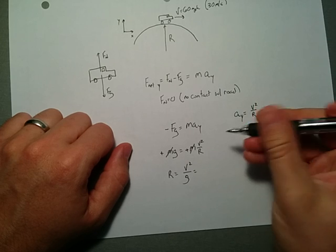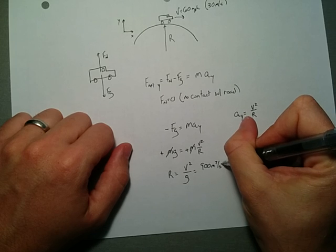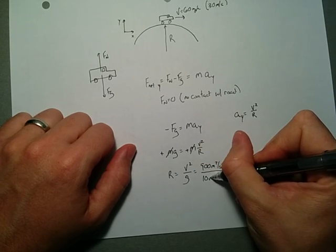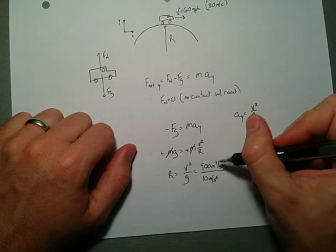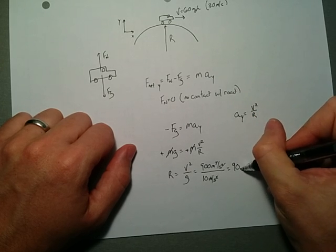V squared is just 30 squared. 30 squared is just 900 meters squared per second squared. I'm going to use my old trick of saying that's around 10 meters per second squared. Look, our per second squared cancels out our meters, one of our meters cancels out here. And we just get that this is equal to 90 meters.